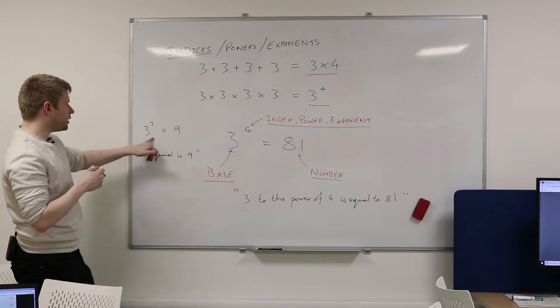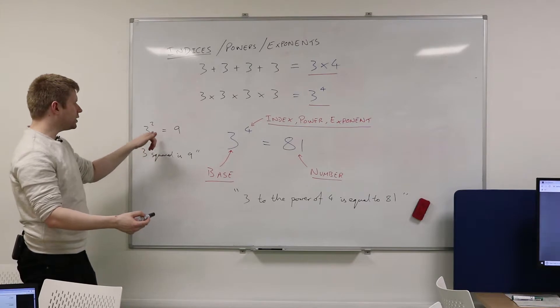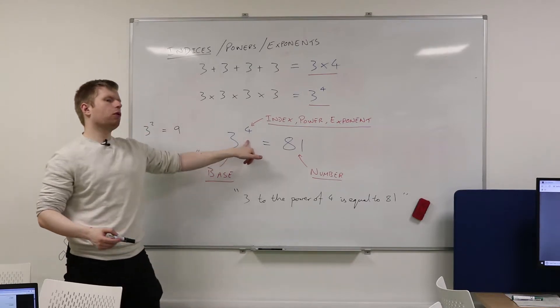So here I could say 3 to the power of 2 is equal to 9, but we tend to give this a special name, 3 squared. Can anybody remember why?